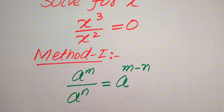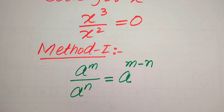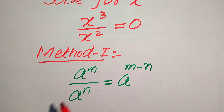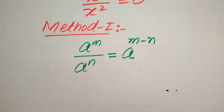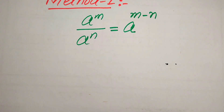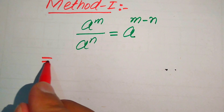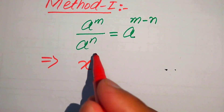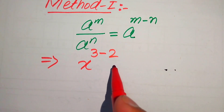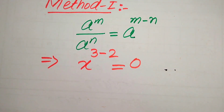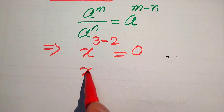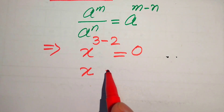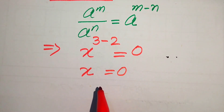According to this rule of the exponent form, we move the smaller exponent towards the largest exponent. Here our smaller exponent is 2 and 3 is the largest exponent, so we move 2 towards 3. It will be written as x to the power of 3 minus 2 equals 0, and further we have x to the power of 1 — since 3 minus 2 equals 1 — and this equals 0.